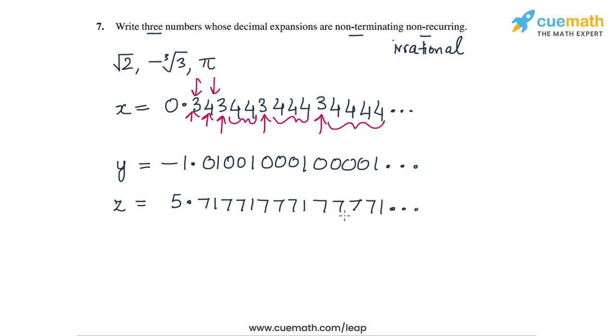And yet again, there is no recurring pattern in this sequence of digits after the decimal point. So z is also a non-terminating, non-recurring decimal.